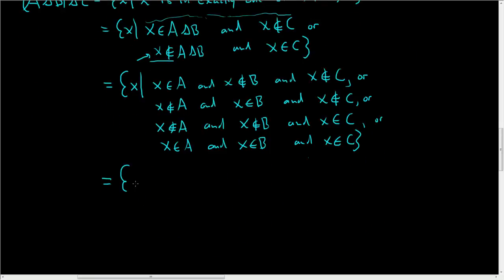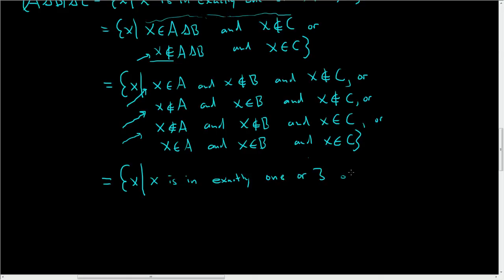This is the set of all X such that: in the first case, X is only in A; in the second case, X is only in B; in the third case, X is only in C; and the last case, X is in all of them. So X is in exactly one or three of A, B, C.